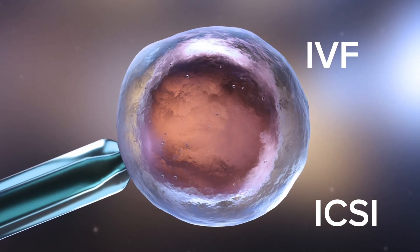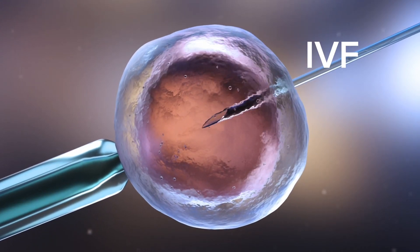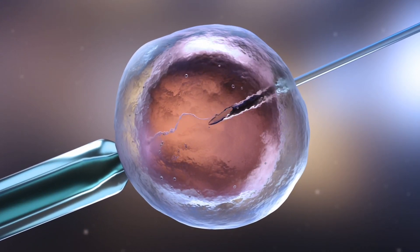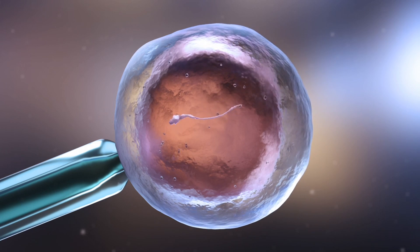In vitro fertilization, or IVF, is a fertility treatment where human eggs are fertilized in a lab and then transferred back into a body for pregnancy. Here's a step-by-step explanation of the process.